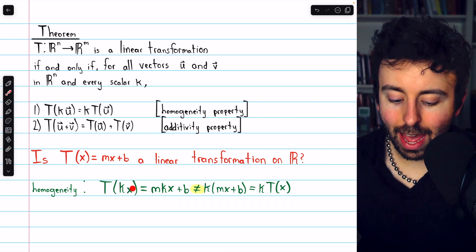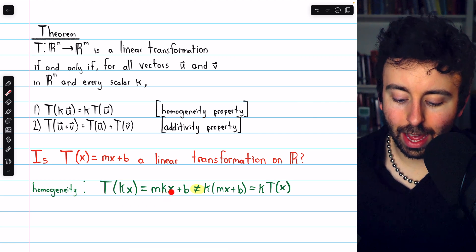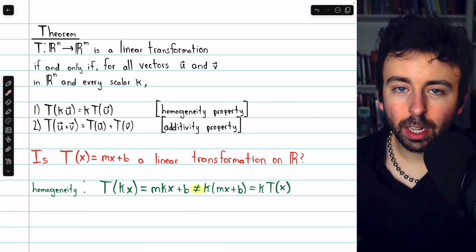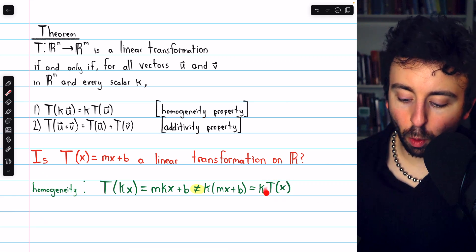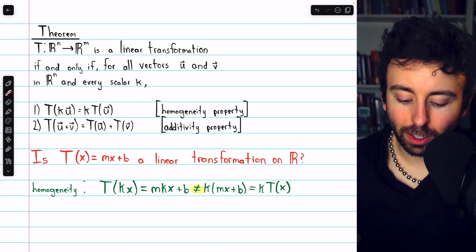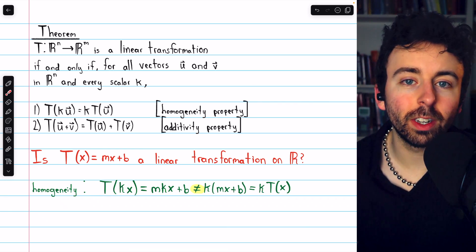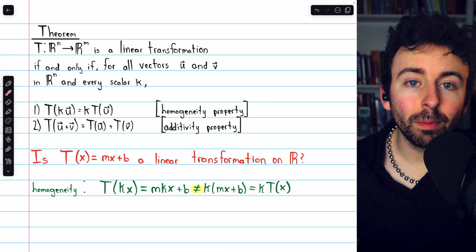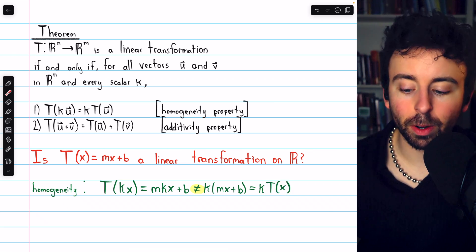T of kx, by definition, is m times kx plus b. But that's not equal to what would happen if we transformed x under this transformation and then multiplied it by k. So you can't just take the scalar out of the transformation without changing the result. Because if we transform the vector x, which in this case is just a real number,